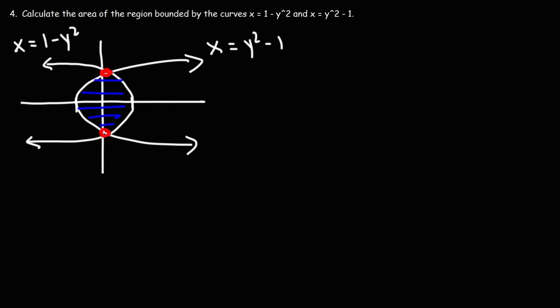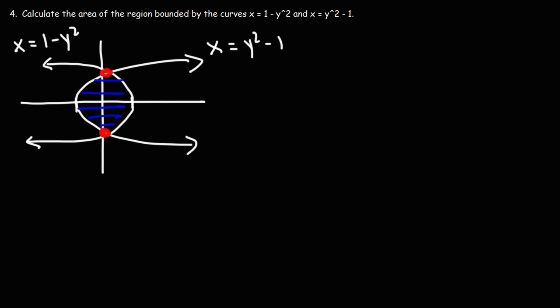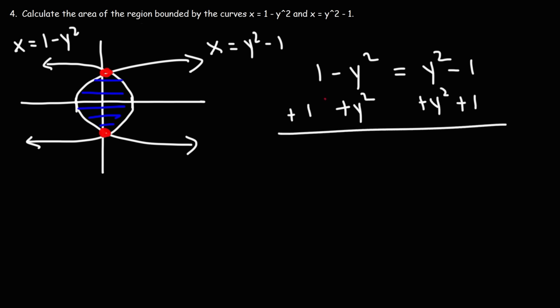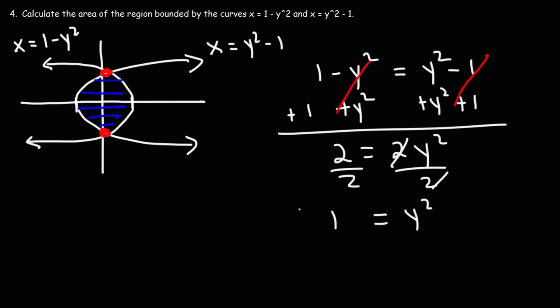To find the points of intersection, set 1 minus y squared equal to y squared minus 1. Adding y squared and 1 to both sides: 2 equals 2y squared, so y squared equals 1. Taking the square root: y equals plus or minus 1. So the y-values of the intersection points are negative 1 and positive 1.